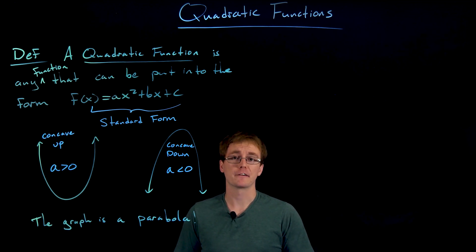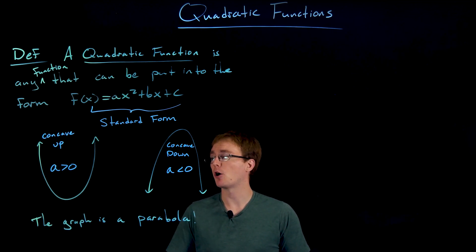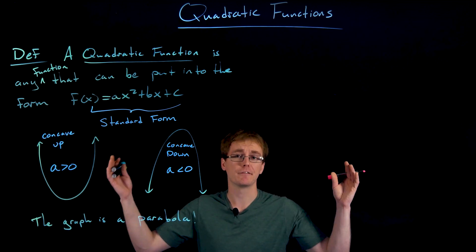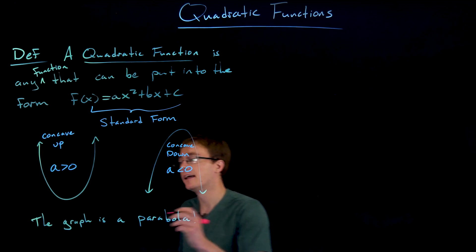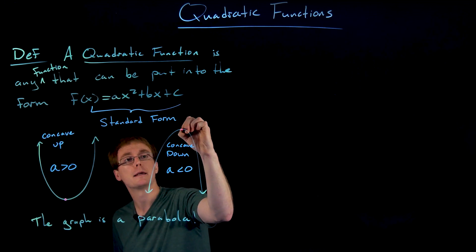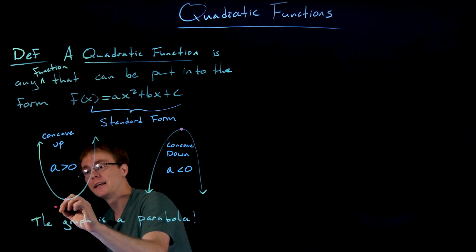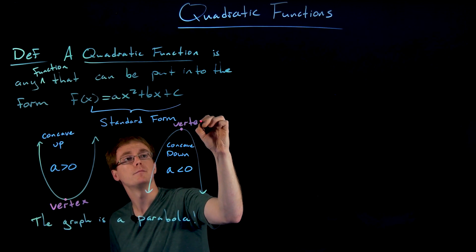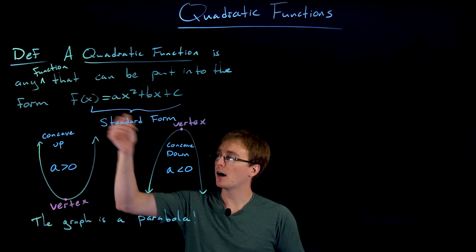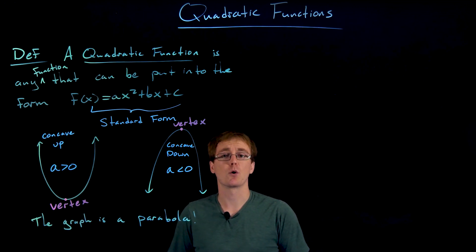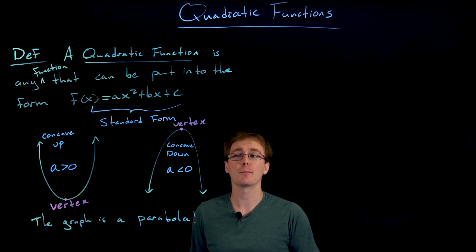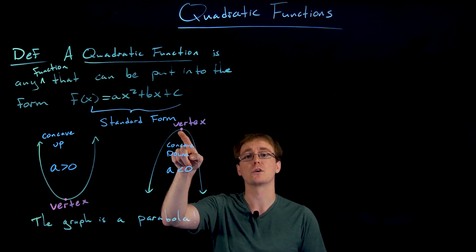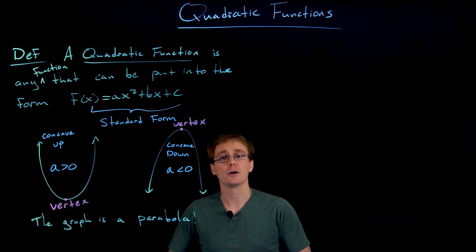Another important fact about our quadratic functions or parabolas is that they always have either an absolute minimum or an absolute maximum, depending on whether they are concave up or concave down. We always refer to these points — whether a minimum or maximum — as the vertex of our parabola. For a concave up parabola, the vertex corresponds to the minimum, and for a concave down parabola, the vertex corresponds to the maximum.